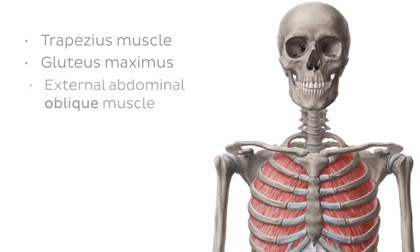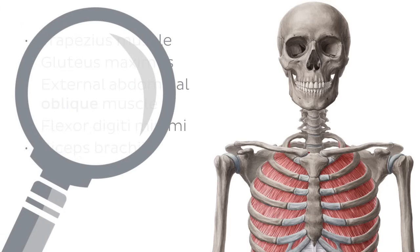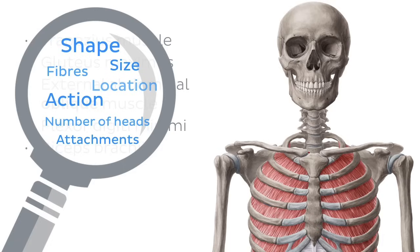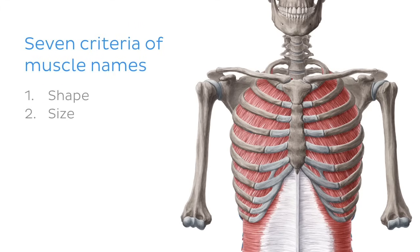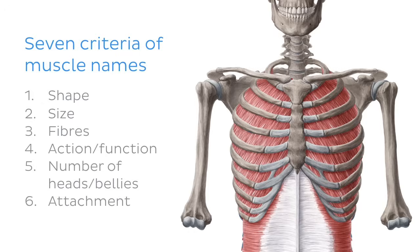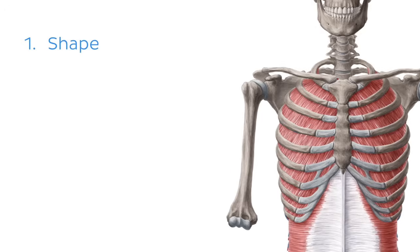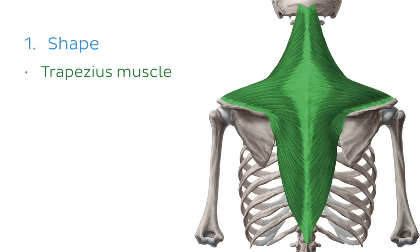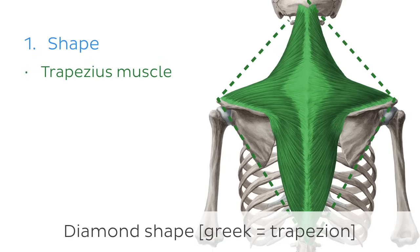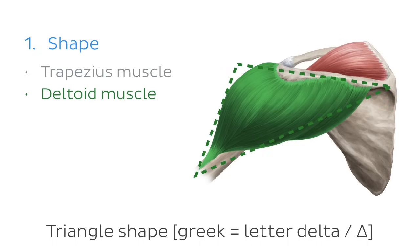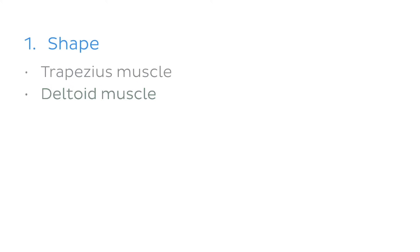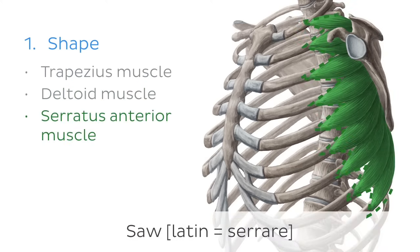And as we've been learning in this series, it's all in the name, and muscles are no different. Once you learn to decipher the parts of their terminology, you're going to see that there are seven main criteria which can be coded into the name of a muscle. The first of these, contributing to a muscle name, is its shape. For example, the trapezius muscle — trapezion means diamond-shaped, and you can clearly see why on this muscle. The deltoid muscle suggests the triangular shape of the Greek letter delta. Or the serratus anterior muscle, which gets its name from serrare, meaning saw in Latin.